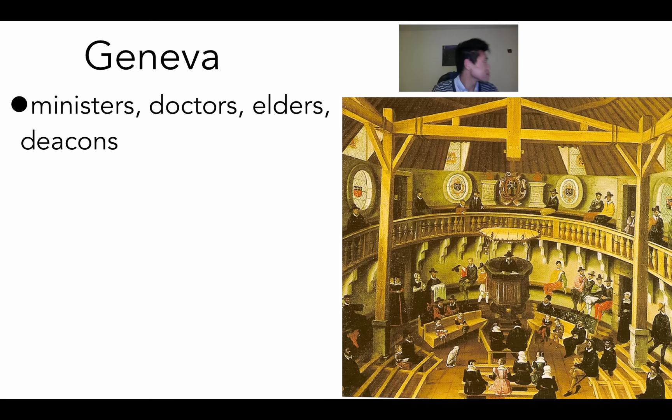It's a theocracy in Geneva where church leaders are seen as greater than civil authorities. The duty of the elect, as Calvin calls them, is to Christianize the state. That's different from Luther, who said spiritual authority is not supposed to overtake temporal or civil authority — because God put civil authority in place for a reason, and we should accept what God has instituted.